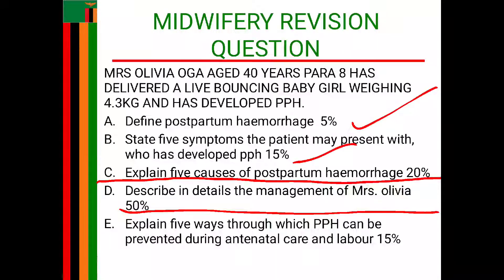The next heading is observation. I will observe the general condition of the patient to determine the level of consciousness. I will measure vital signs — temperature, pulse, respirations, and blood pressure — to detect any deviations from normal such as Sheehan's syndrome. I will measure temperature to detect fever indicating infection such as puerperal sepsis, measure pulse rate to detect tachycardia which may indicate hypovolemia, measure respirations to rule out respiratory distress, and observe vaginal bleeding noting the amount, consistency, and color to rule out continuous PPH.